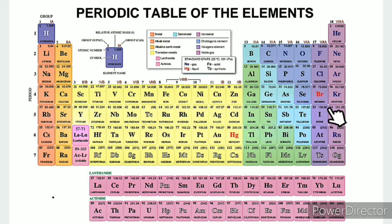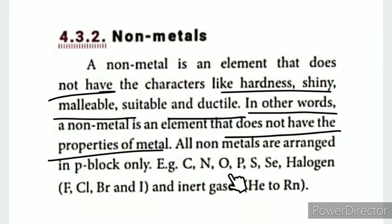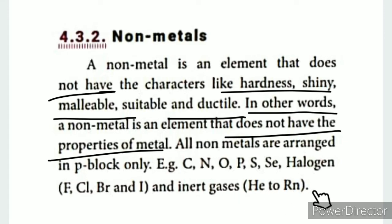All non-metals are arranged in the p-block only. Examples include Carbon, Nitrogen, Oxygen, Phosphorus, Sulfur, Selenium, and the halogens: Fluorine, Chlorine, Bromine, and Iodine. The inert gases — Helium, Neon, Argon, Krypton, Xenon, and Radon — are also included.